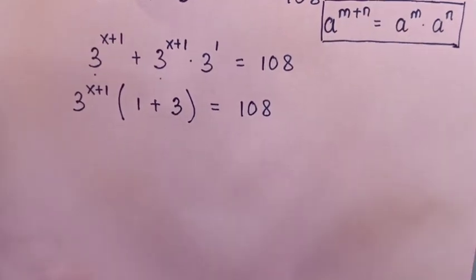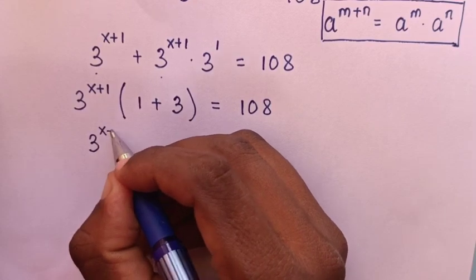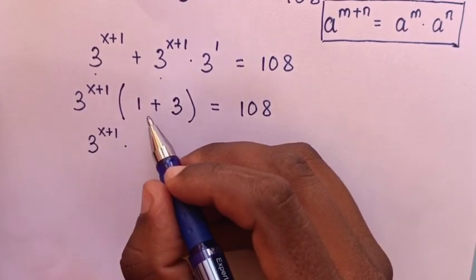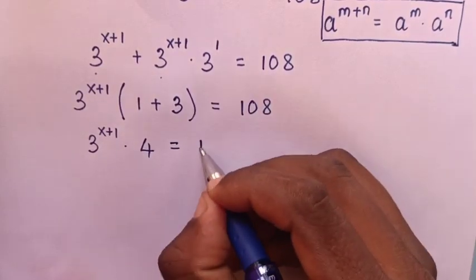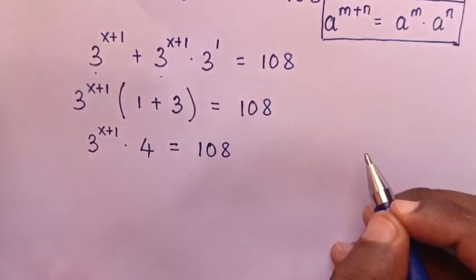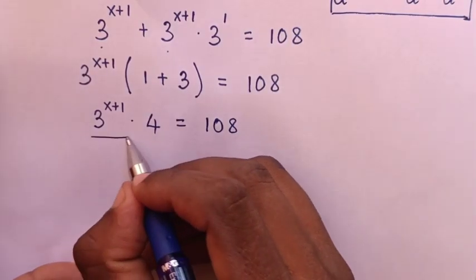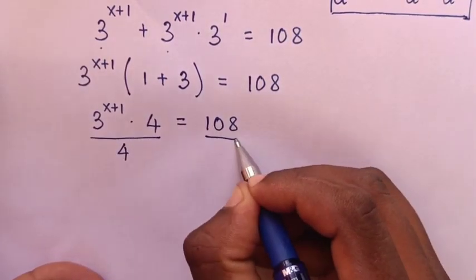Then our equation will be 3 power x plus 1 times this plus this is 4, is equal to this 108. Then in the next step, we divide by 4 in both sides.